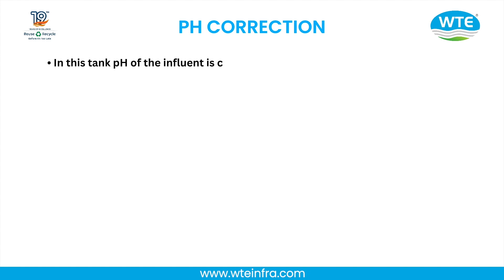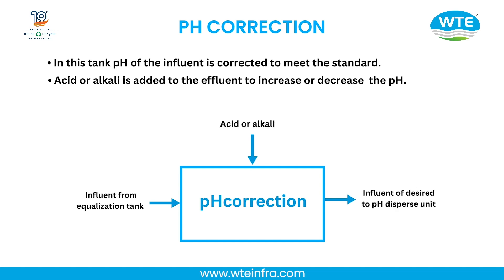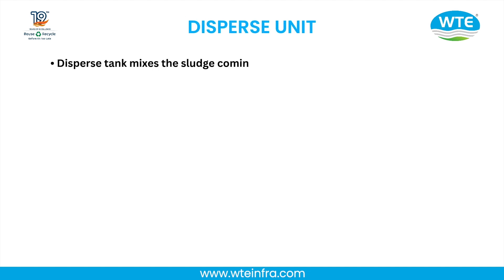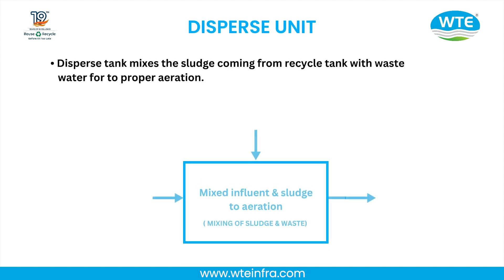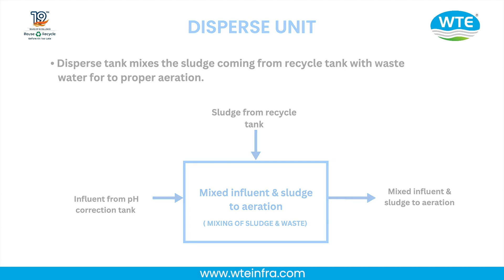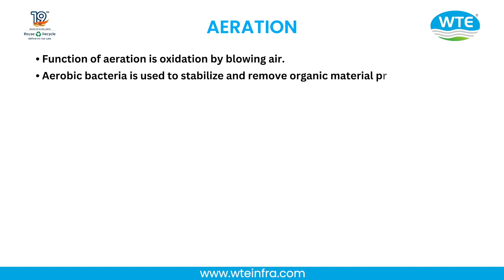pH Correction: The pH of the influent is corrected to meet the standard. Acid or alkali is added to the effluent to increase or decrease the pH. Dispersed Tank: Mixes the sludge coming from the recycled tank with the wastewater for proper aeration. Aeration: The function of aeration is oxidation by blowing air. Aerobic bacteria are used to stabilize and remove organic material present in the waste.